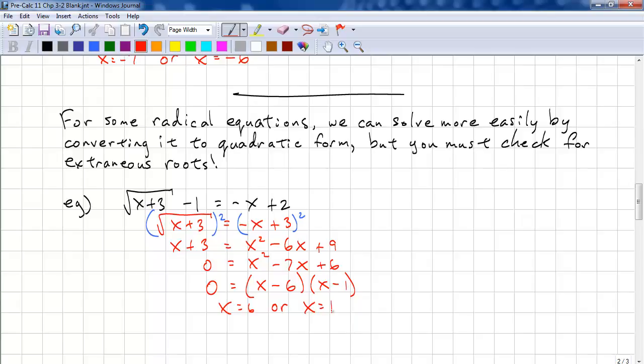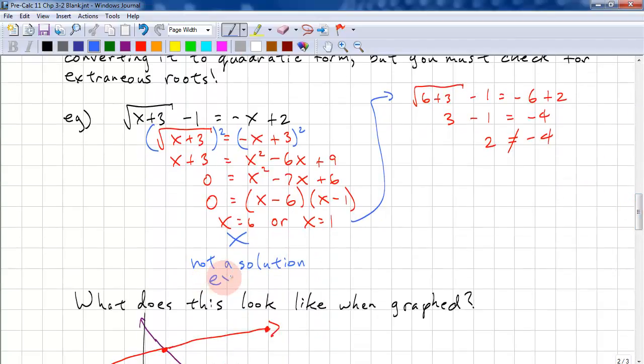And now we are required to check our answer for extraneous roots. So, put it back into the original one. We have square root 6 plus 3 minus 1 equals minus 6 plus 2. This becomes square root 9, which is 3 minus 1. And this becomes negative 4. This is 2 equals negative 4, but that does not equal, so this is not a solution. Not a solution. And you can also say extraneous.